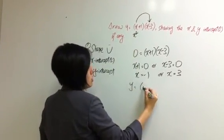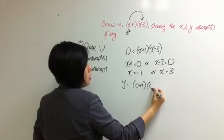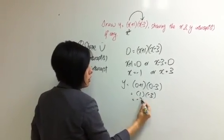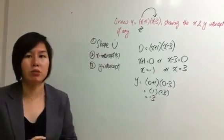y equals to 0 plus 1, 0 minus 3. So this is 1, and this is minus 3. So it gives you a value of minus 3.